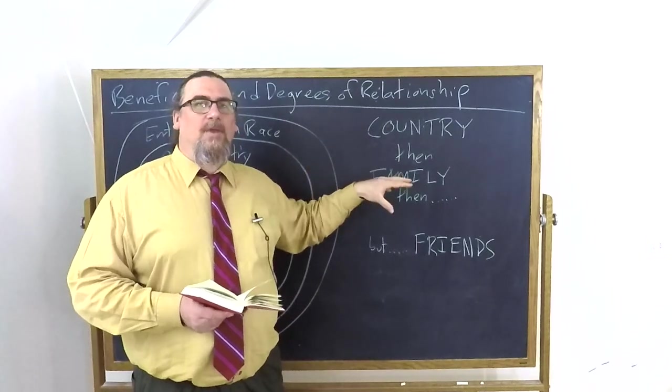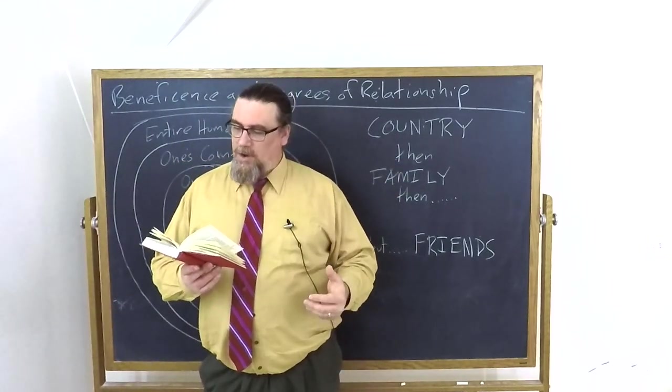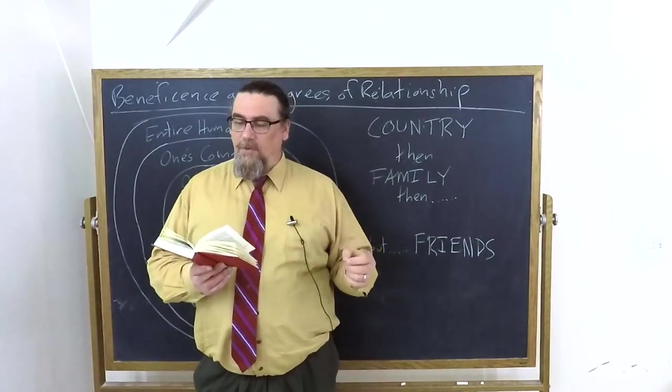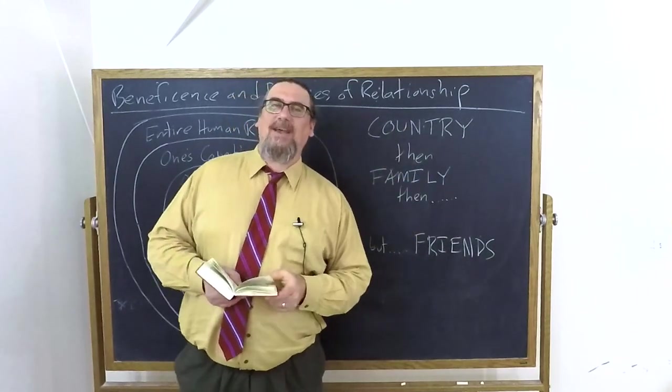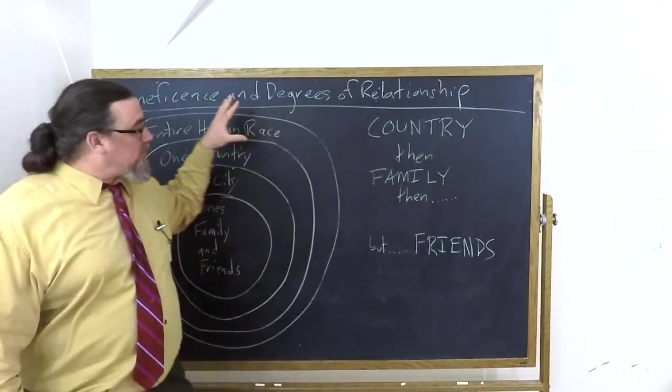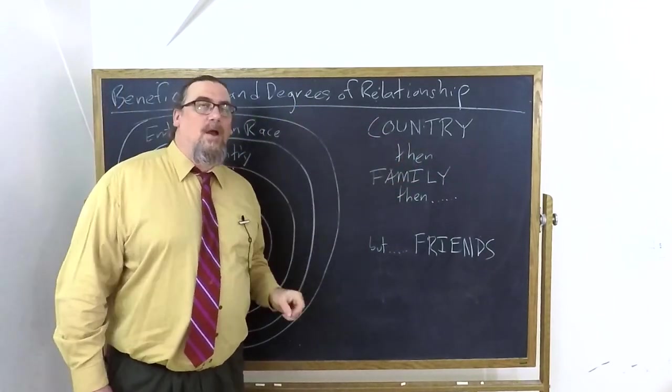Then would come family. And within the family, parents first, then children, then the whole family who looked, he says, to us for support, and have no other protection. Then our kinsmen, like second cousins, people like that. And then the rest of the world, or then one city. So there is a clear priority.